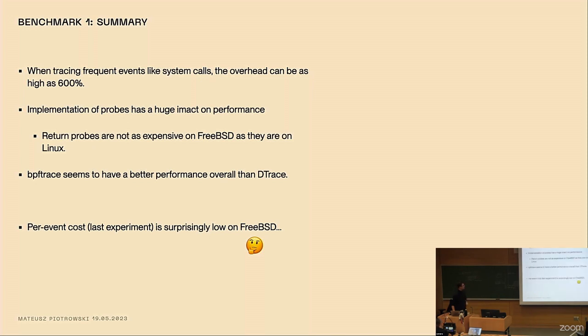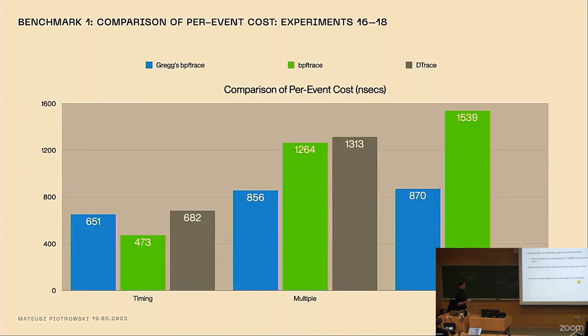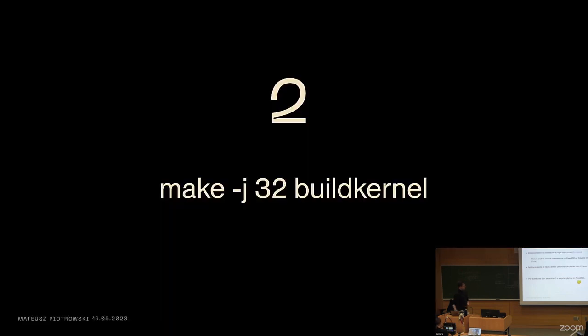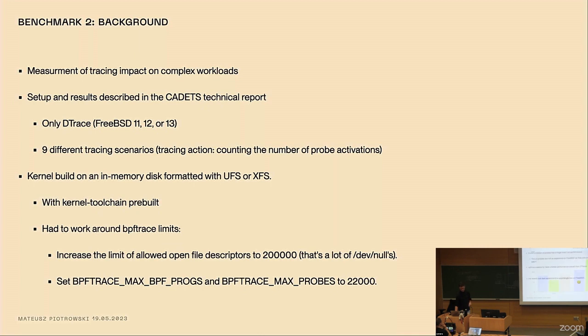Then we have some other results. But ultimately, when tracing frequent events like system calls, the overhead can be as high as 600%. Implementation of probes has a huge impact on performance. For example, return probes are not as expensive on FreeBSD as they are on Linux. And the DTrace team could have a better performance overall than DTrace. But the per event cost is surprisingly low on FreeBSD, as you can see over here. And we'll talk about it a bit later.